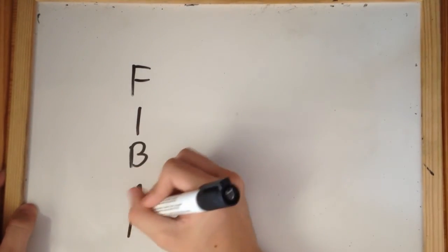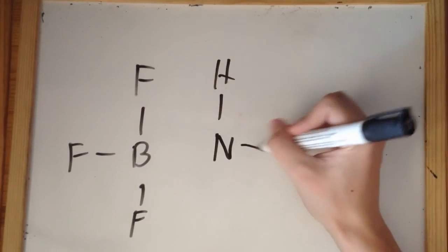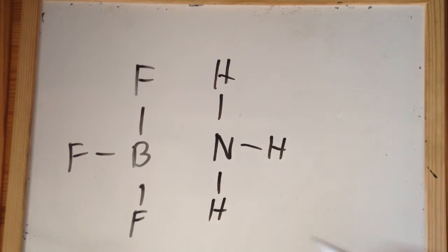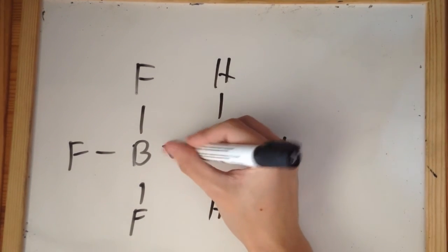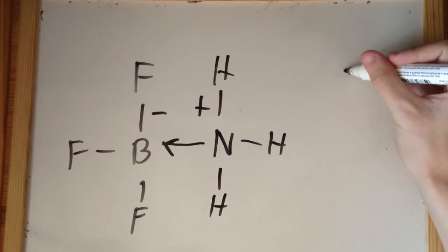Once we have done that we can draw another diagram to show the two molecules that have bonded. We do this by drawing an arrow coming from the nitrogen atom and pointing at the boron atom. It is also important to note the charges of the individual molecules at the end.